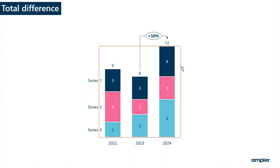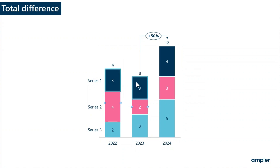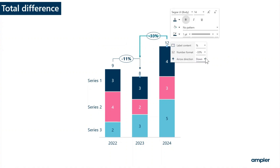Total difference can also be inserted by selecting specific segment points, right clicking and adding total difference. Click on the line to have the calculation update or update the arrow direction from the view.